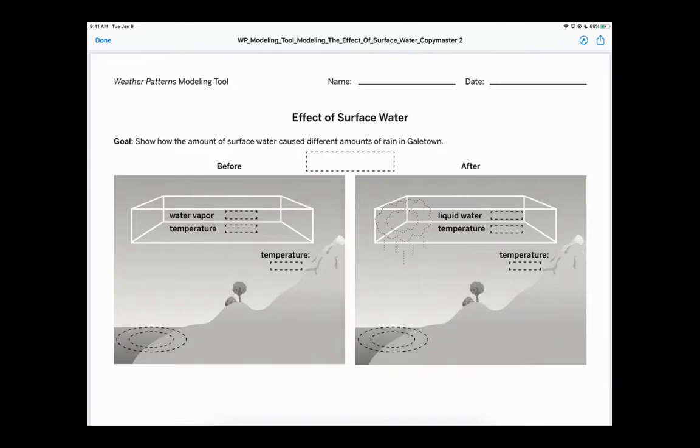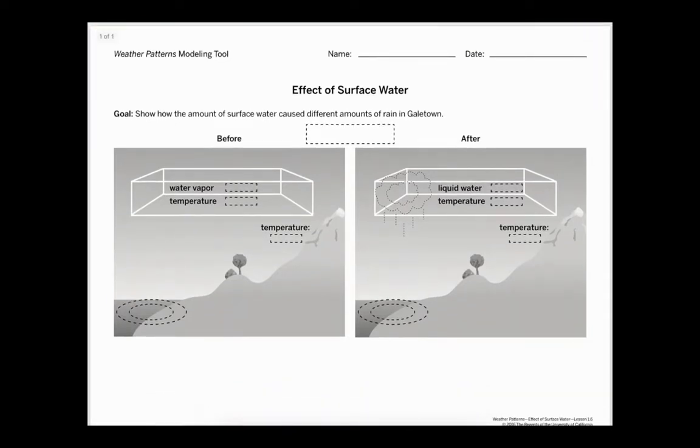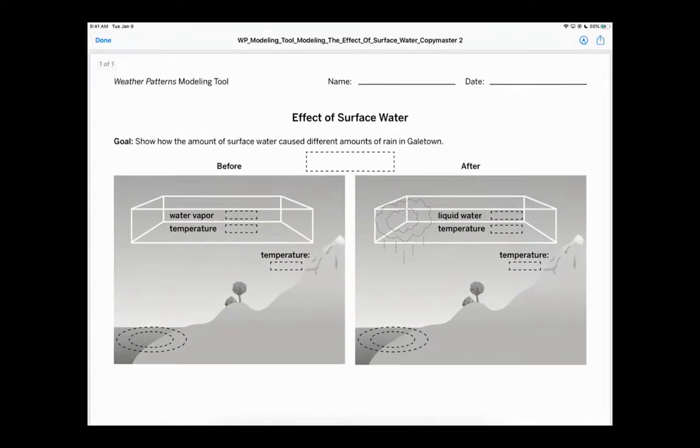So our goal is to show the amount of surface water caused different amounts of rain. So the first thing we're going to show in our model is storm one. And so that's the first thing that I want to do. So I'm going to actually label this. Whoops. No wonder why this isn't working. It wouldn't let me. Okay. Storm one.